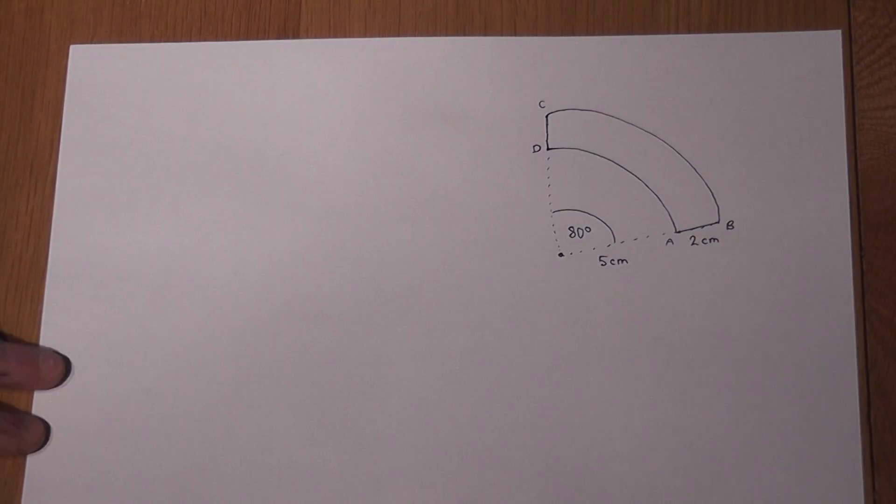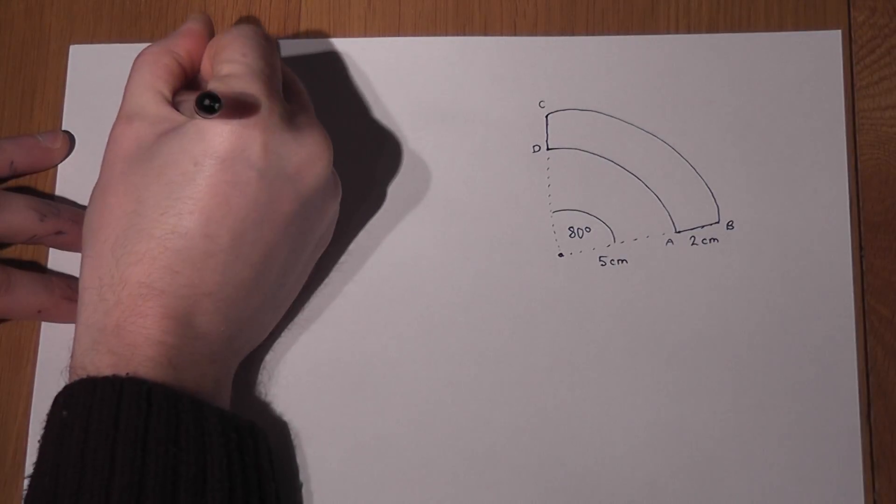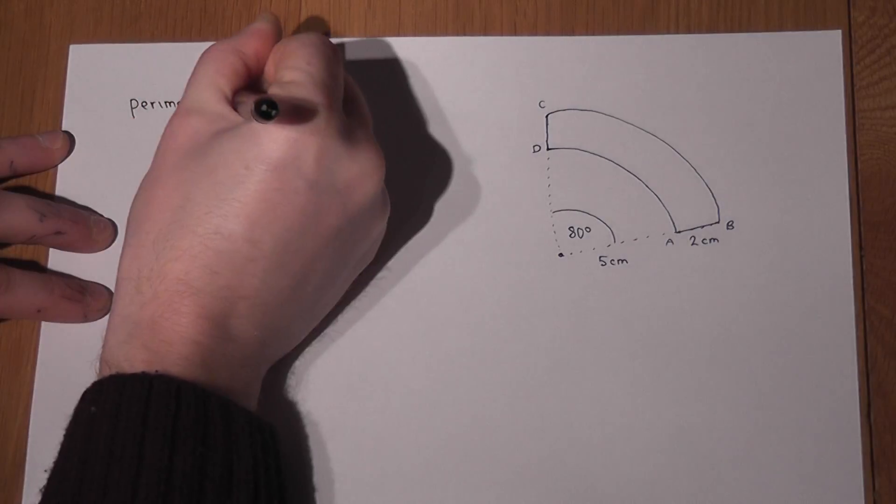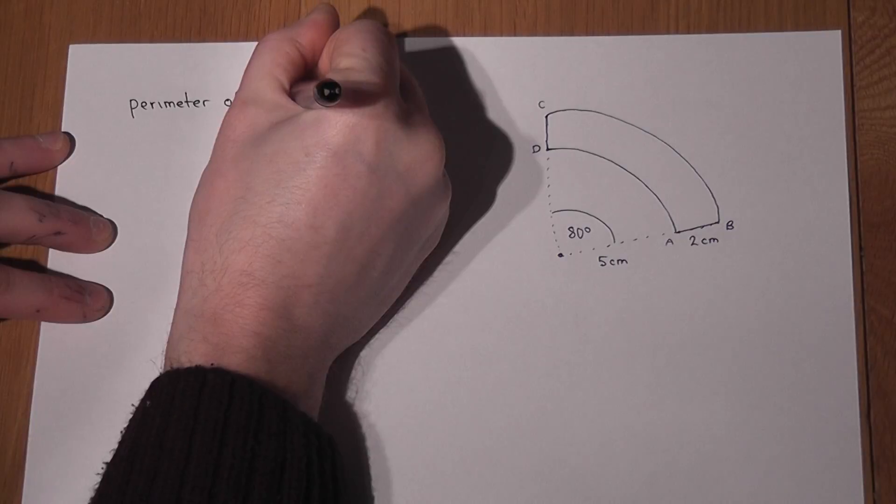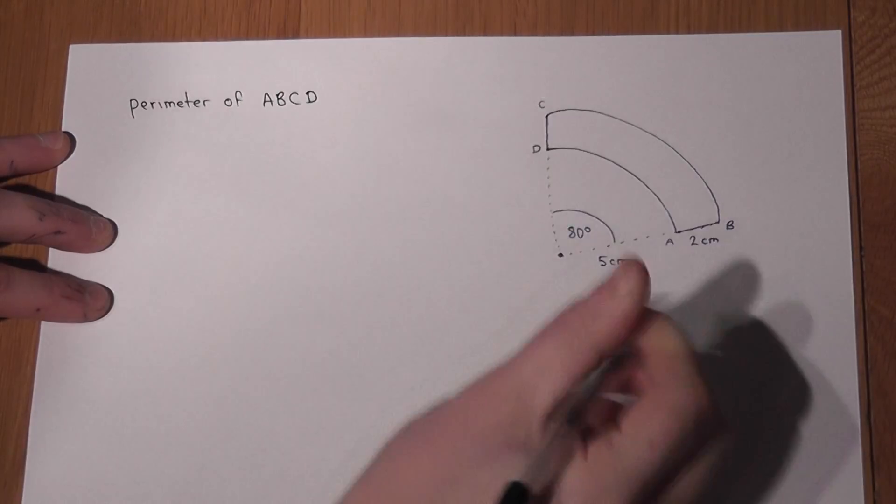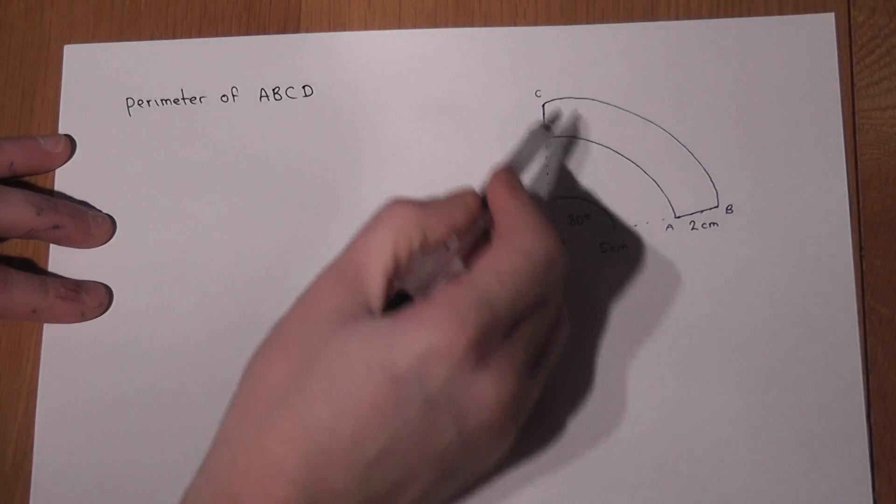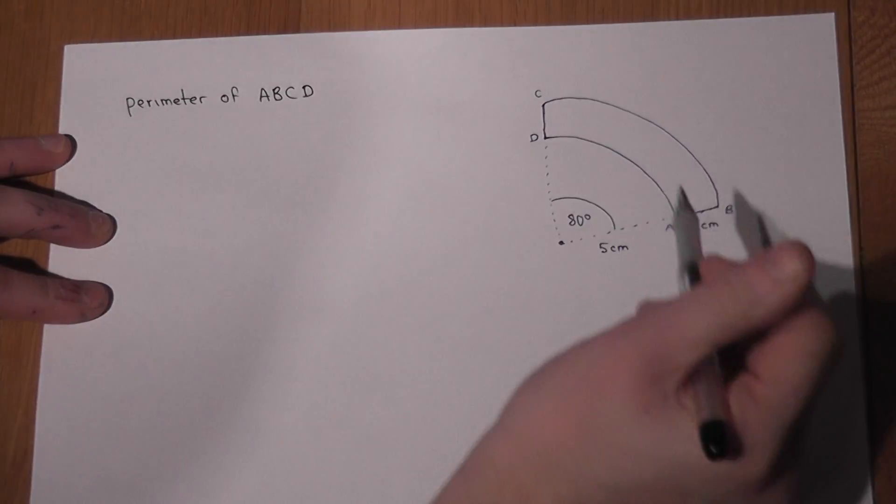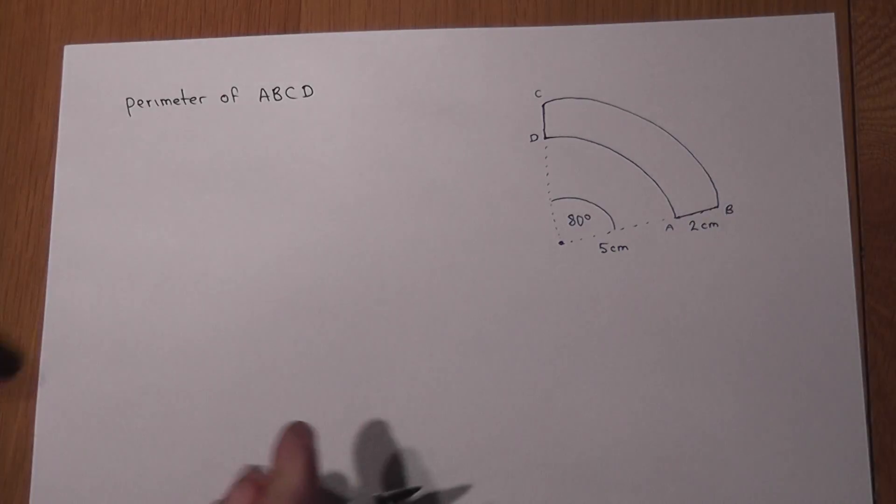This question reviews sectors and we're going to find out the perimeter of the shape ABCD. And this is formed by an arc here and two small straight edges.